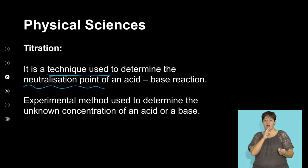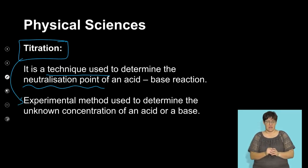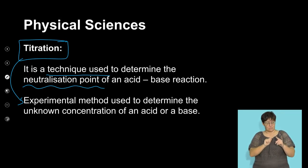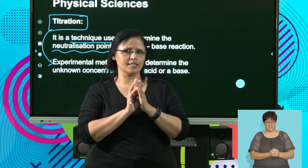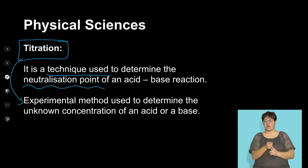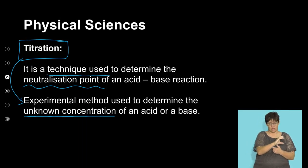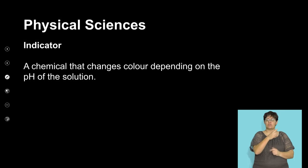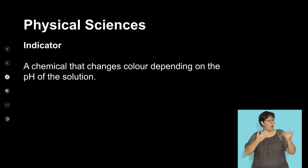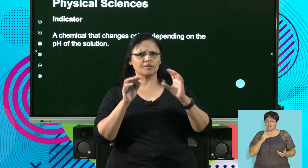Titration is the technique used to determine the neutralization point of an acid-base reaction. So if we have that neutralization reaction, we can make use of an experimental method called a titration to determine that endpoint, meaning the point where the acid and the base have now neutralized each other. That experimental method is used to determine the unknown concentration of either the acid or the base.